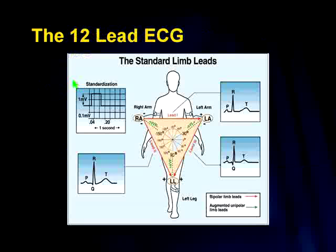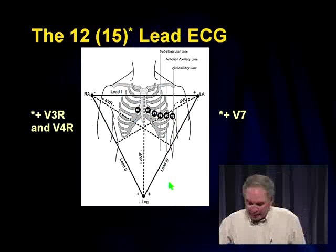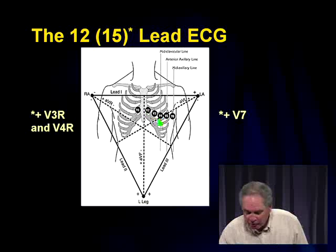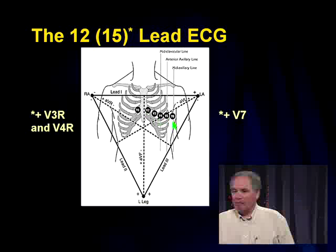The 12-lead ECG consists of leads in the frontal plane and chest leads. The standard limb leads include Lead I — electrical activity from the right arm to the left arm; Lead II — from the right arm to the left leg; and Lead III — from the left arm to the left leg. The chest leads V1 through V6 are placed across the chest. V1 and V2 provide an excellent look at the right ventricle.